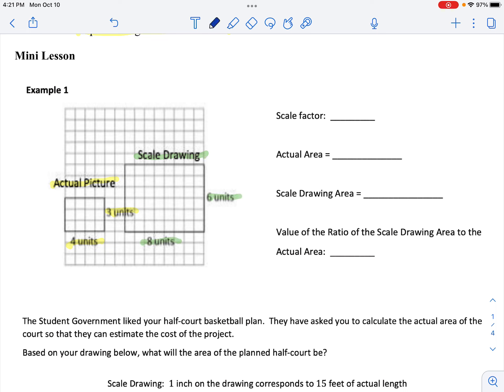So what is the scale factor? Well, we know that the scale factor is the scale divided by the actual. So let's take a set of corresponding sides. 6 divided by 3 equals 2. We could have done 8 divided by 4, which also gets you 2.